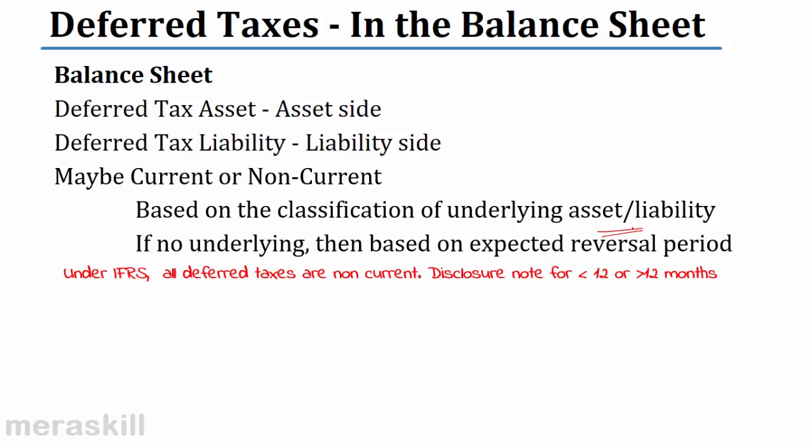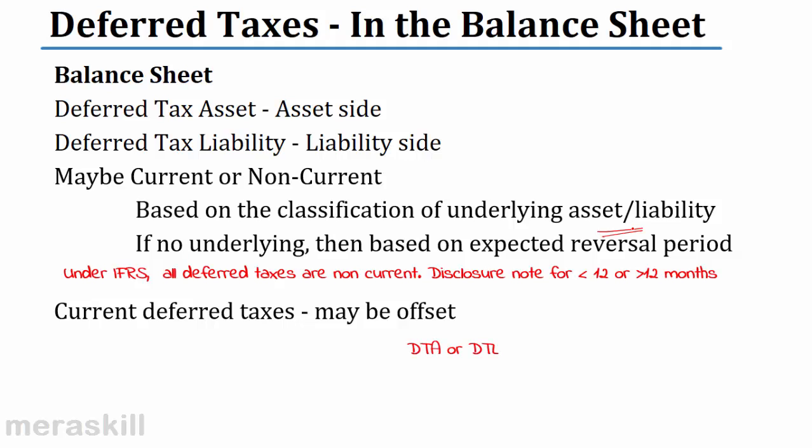Under IFRS, there is a key difference from US GAAP: all deferred taxes are non-current. A disclosure note is required indicating what is within 12 months and what is beyond 12 months. Current deferred tax assets may be offset against current deferred tax liabilities.